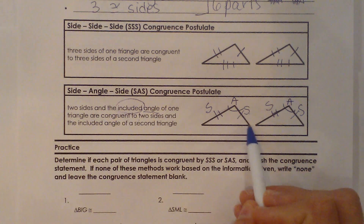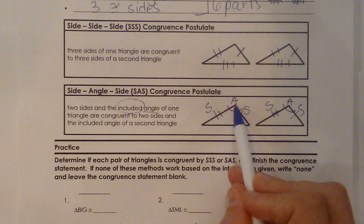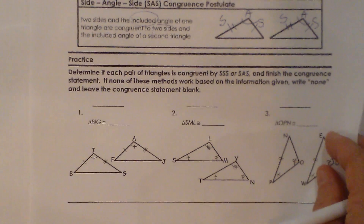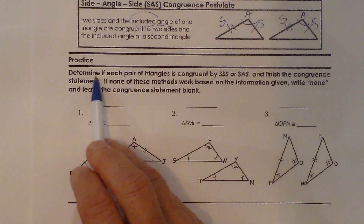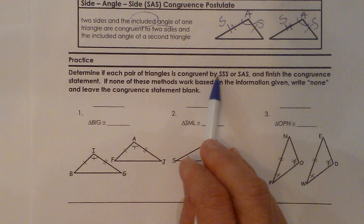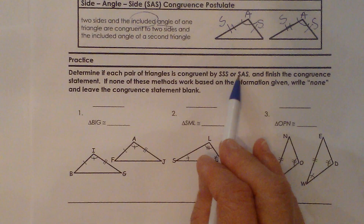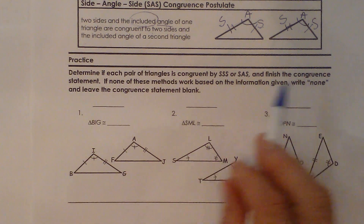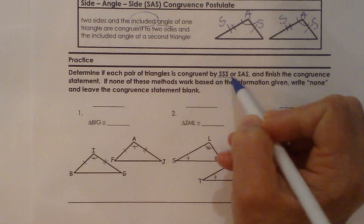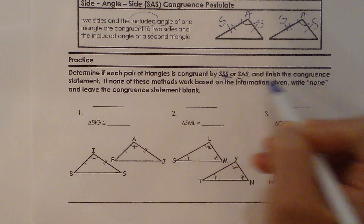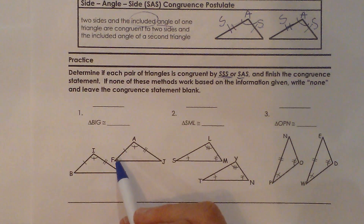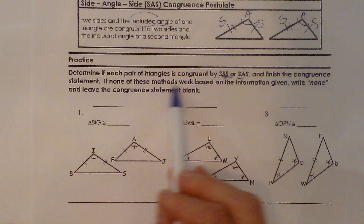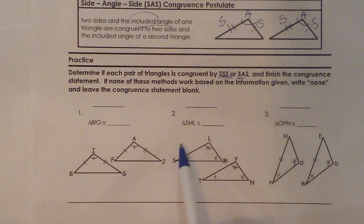Just be careful that they are in that order. Let's look at a couple of examples. It says determine if each pair of triangles is congruent by Side-Side-Side or Side-Angle-Side. Again, we're going to learn some more, but these are the only two we're focusing on today. We're going to finish the congruent statement if we do see they're congruent. If it's not one of these two, we're just going to write none for now.